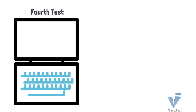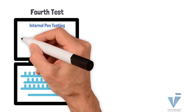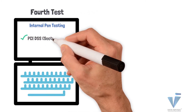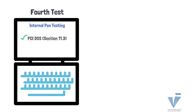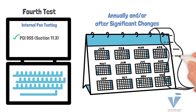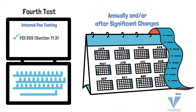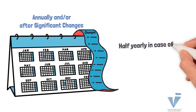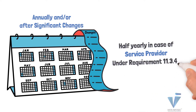The next is internal penetration testing under section 11.3, required annually and/or after significant changes. If you are a service provider, under requirement 11.3.4.1 it must be done half-yearly — that is, an internal pen test of the IP addresses twice a year.